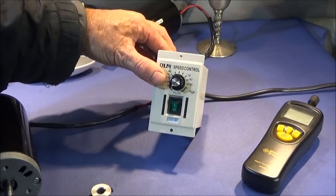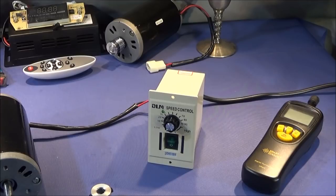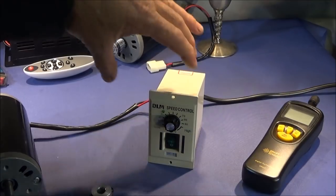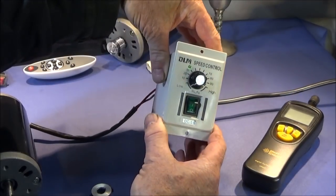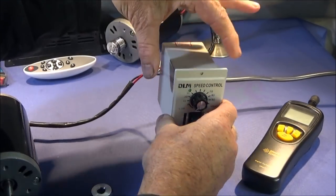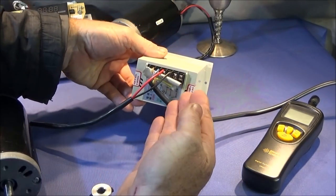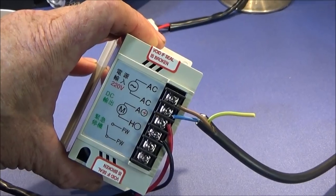It's called a DLM speed control and I got it from Banggood. It has an input voltage of AC 220 volts and an output voltage of DC 0 to 220 volts. It can control motors from 0 to 400 watts. You can see the box is nice and small and it's got screw holes to mount into another safe box.